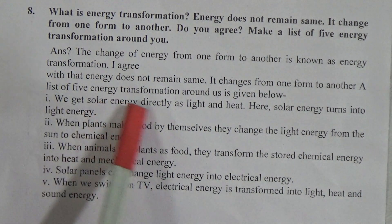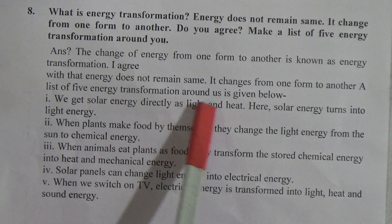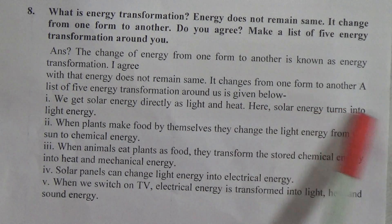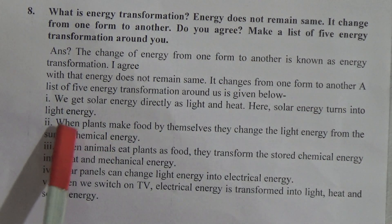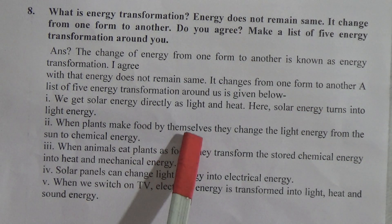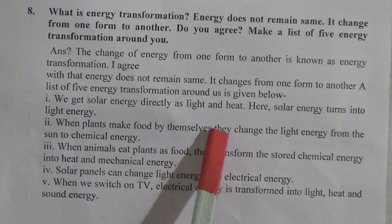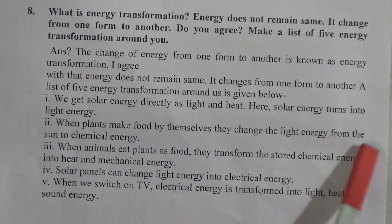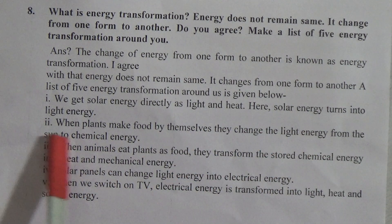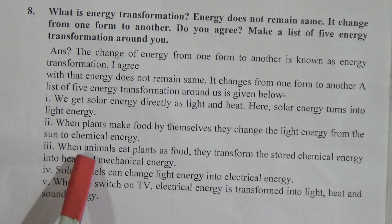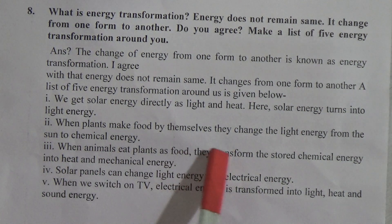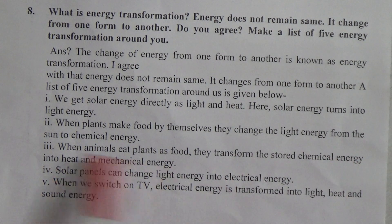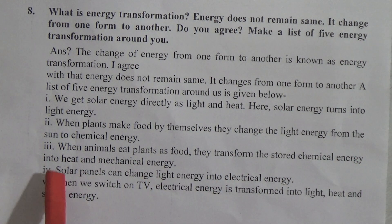Our list of five energy transformations around us: First, we get solar energy directly as light and heat energy — here solar energy turns into light energy. Second, when plants make food by themselves, they change the light energy from the sun into chemical energy. Third, when an animal eats plants as food, they transform the stored chemical energy into heat and mechanical energy.